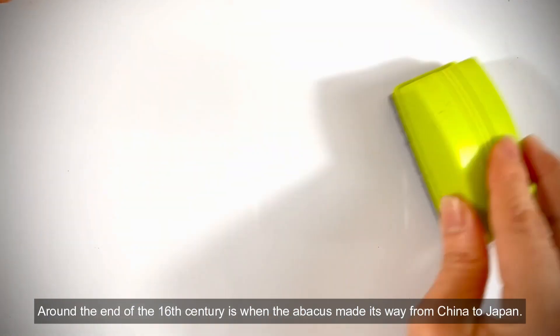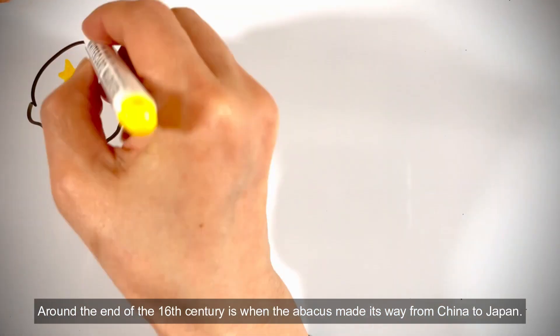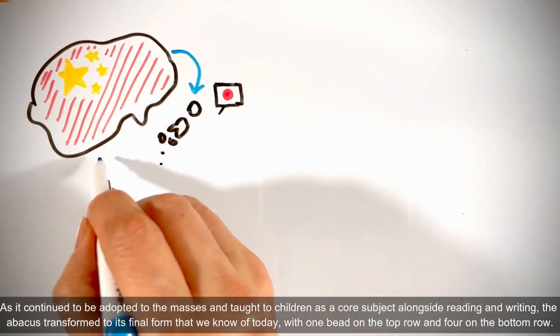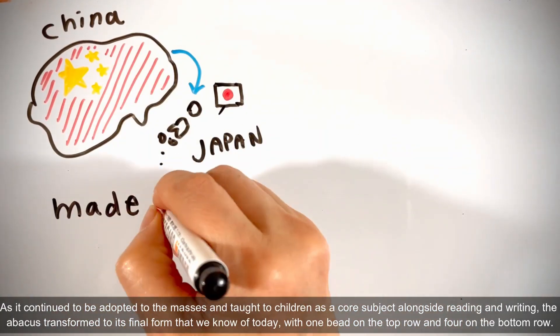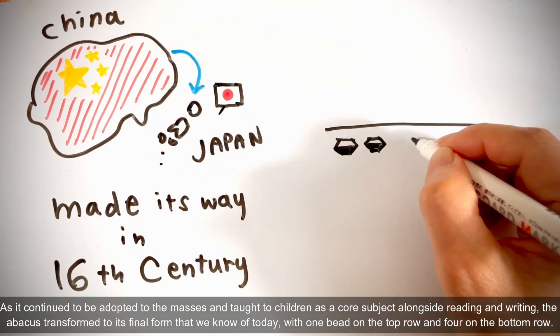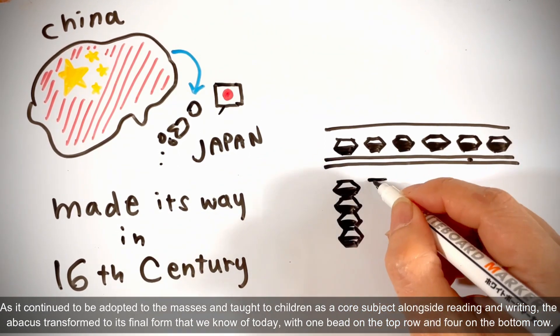Around the end of the 16th century is when the Abacus made its way from China to Japan. As it continued to be adopted through the masses and taught to children as a core subject alongside reading and writing, the Abacus transformed to its final form that we know today.